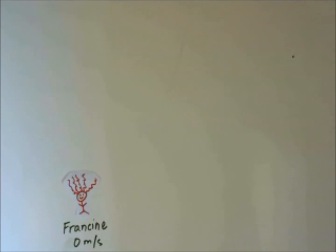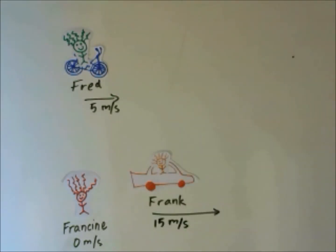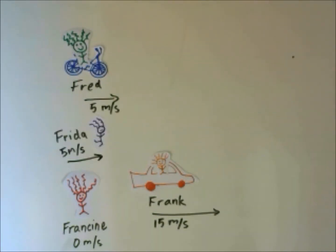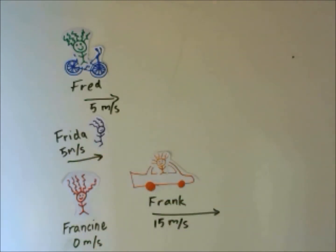Let's consider another example. Relative to the surface of the earth, Francine is standing still. Fred is on his bicycle; relative to the surface of the earth, Fred is moving five meters per second. Frank has borrowed Fred's car and Frank is moving relative to the surface of the earth at 15 meters per second. And now we have Frida — Frida is running relative to the surface of the earth at five meters per second. So we have all these different perspectives, all these different frames of reference that we can look at.